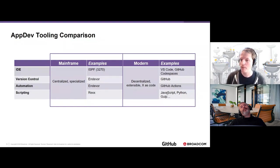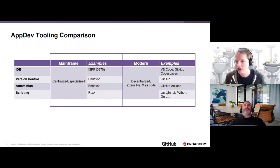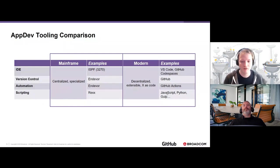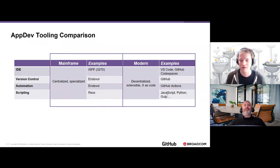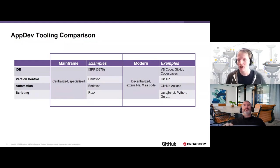A more modern approach looks at a decentralized world where IDEs can be varied — something like VS Code or GitHub Codespaces, which we'll talk about in just a moment. Version control uses Git with solutions like GitHub, and automation through Actions communicates with other systems. You also have the ability to script in any modern programming language — JavaScript, Python, Bash, Gulp, and so on.